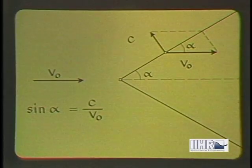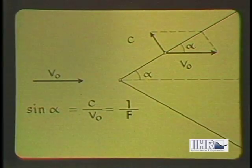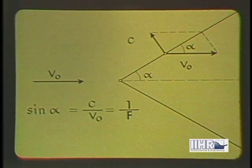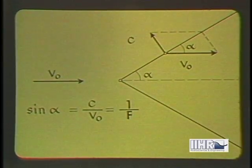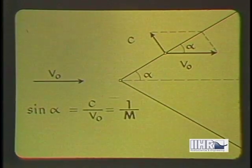Half this angle is known as the Mach angle. The reciprocal of its sine is simply the Froude number in the case of gravity waves. In the case of elastic waves, its counterpart is known as the Mach number.